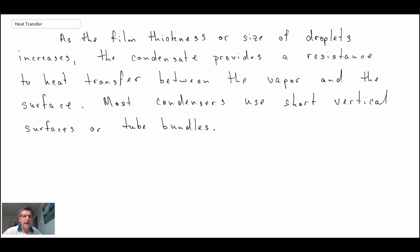The reason why film condensation is less efficient is because as the film thickness grows, the condensate or the liquid that is forming on the surface actually provides a thermal resistance, or almost like an insulating blanket to the surface, and it then minimizes the amount of condensation that's occurring.